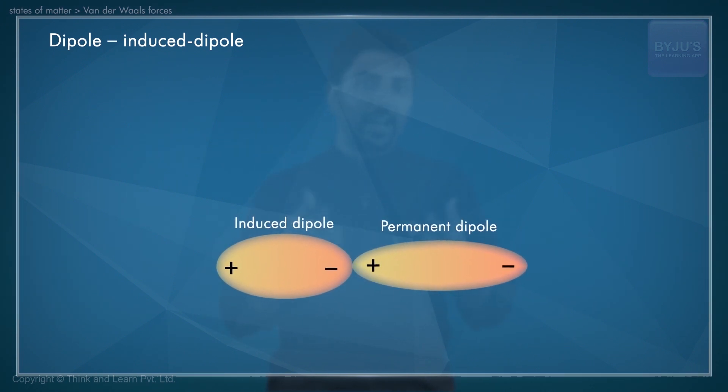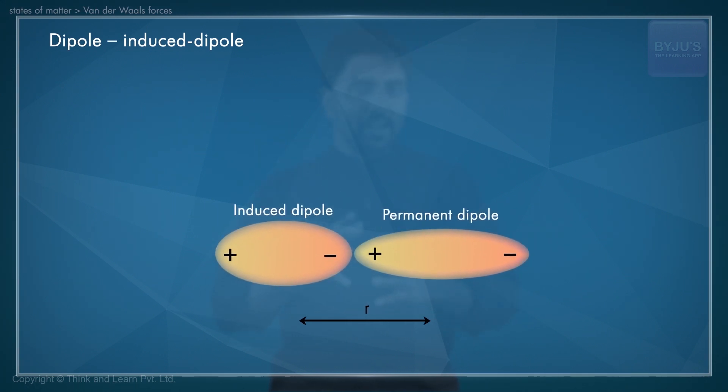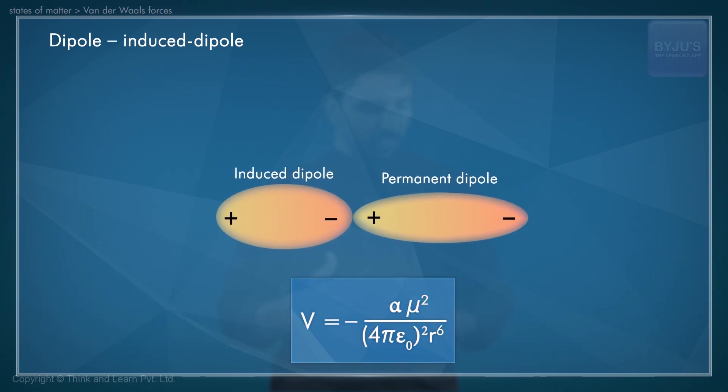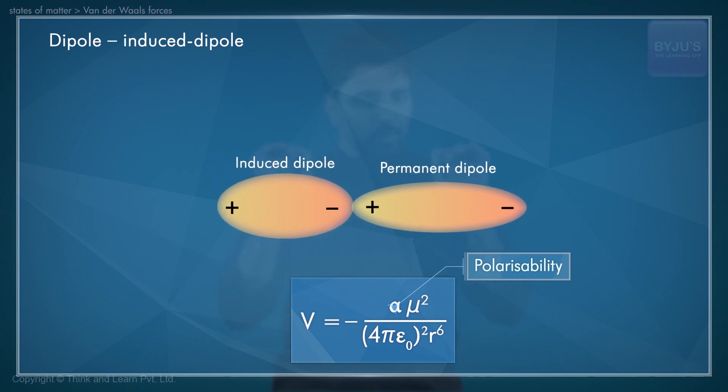The dipole generated in an atom or a non-polar molecule is said to be an induced dipole because the separation of positive and negative charges in the neutral entity is due to the proximity or closeness of an ion or a polar molecule. The interaction between dipole moment of a polar molecule and the induced dipole of a neutral non-polar species is called a dipole-induced dipole interaction. If the dipole moment of a polar molecule is of magnitude mu, then the potential energy for the dipole-induced dipole interaction is given by this expression.